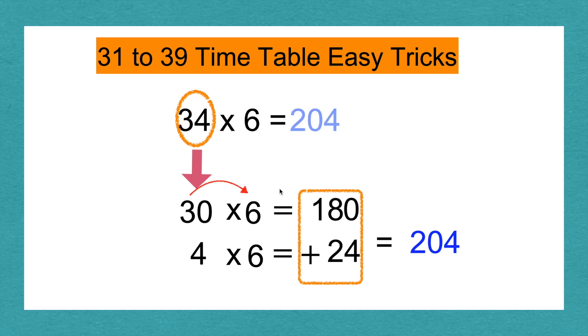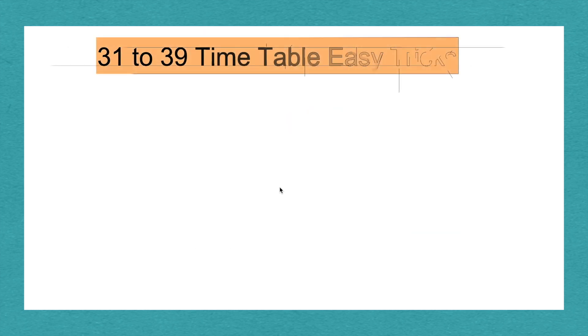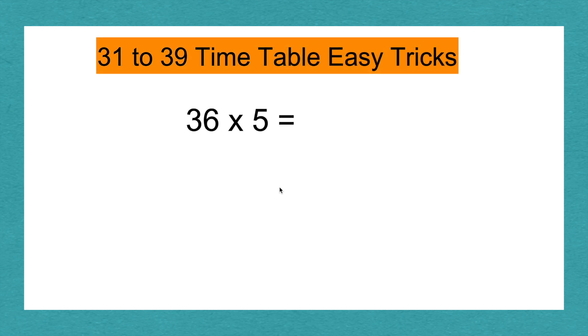34 times 6 equals 204. Next, we are going to do 36 times 5. Split 36. 30 and 6. 5 is our other number.